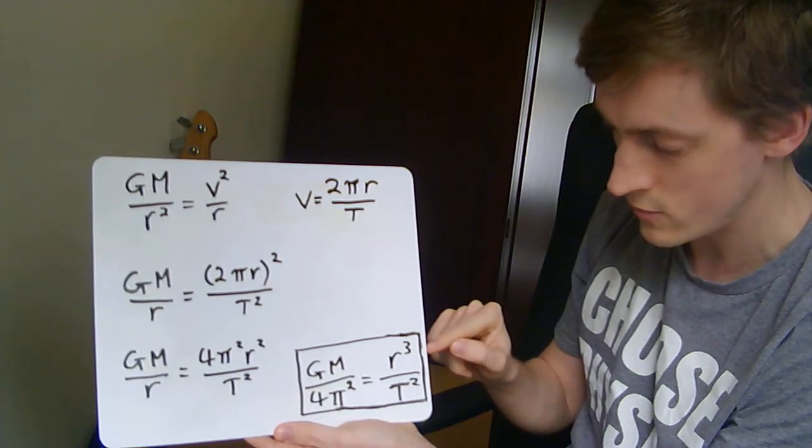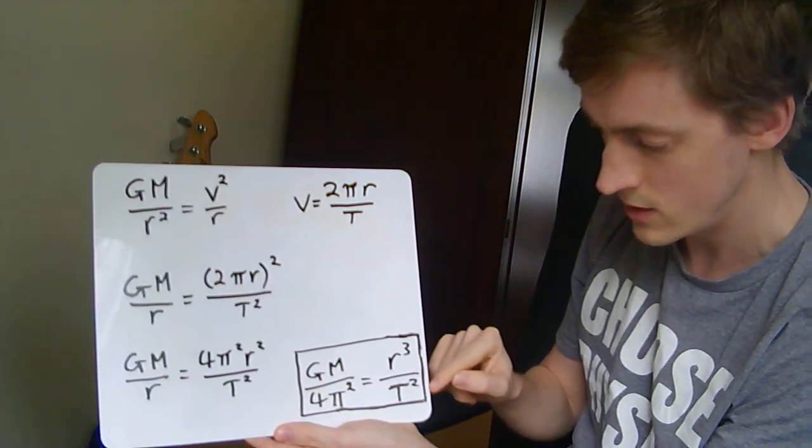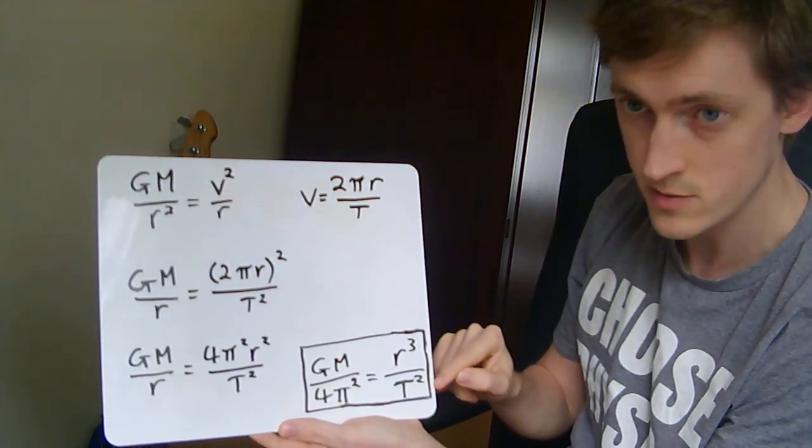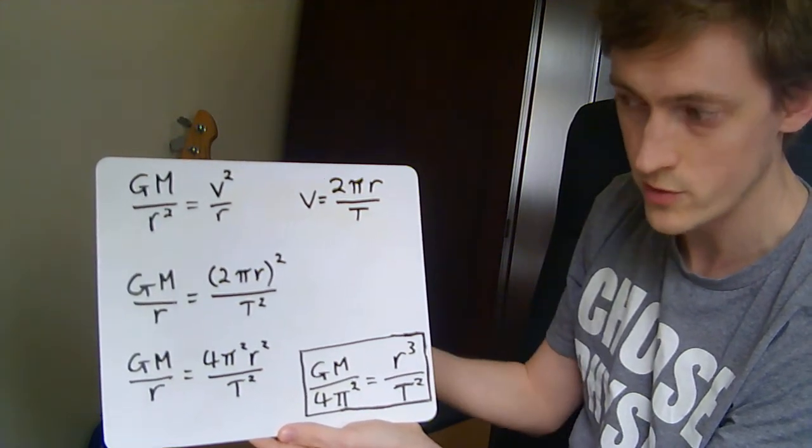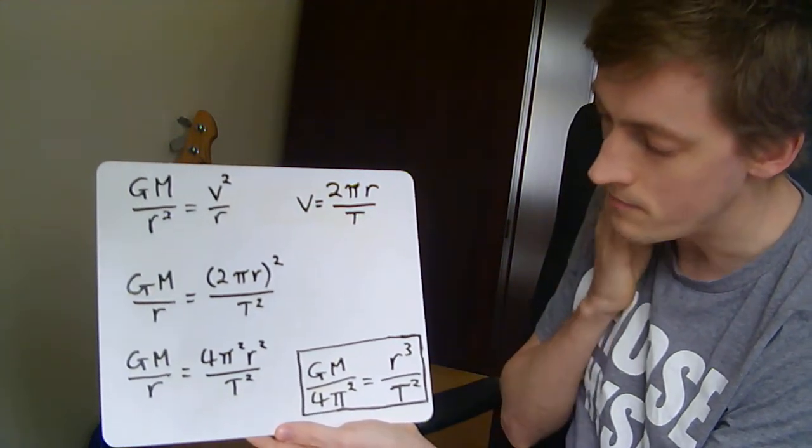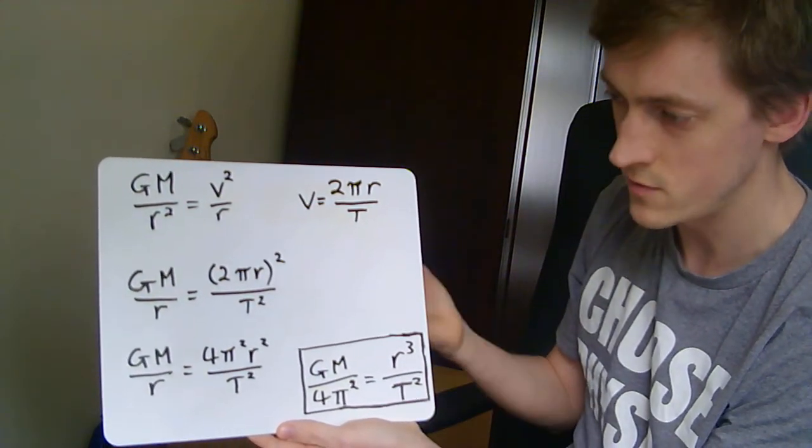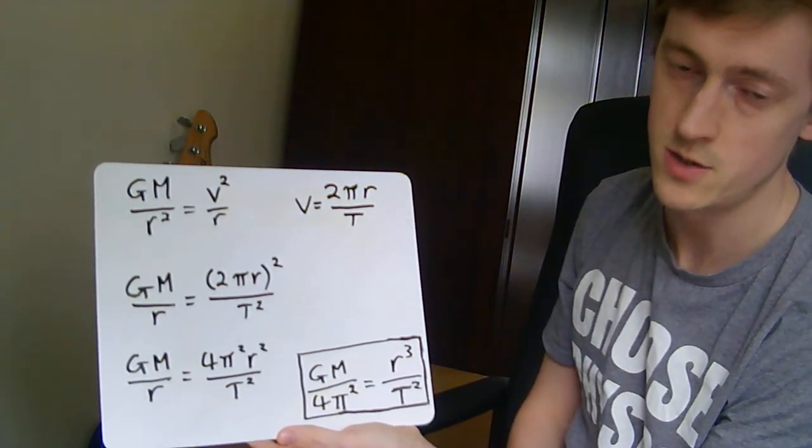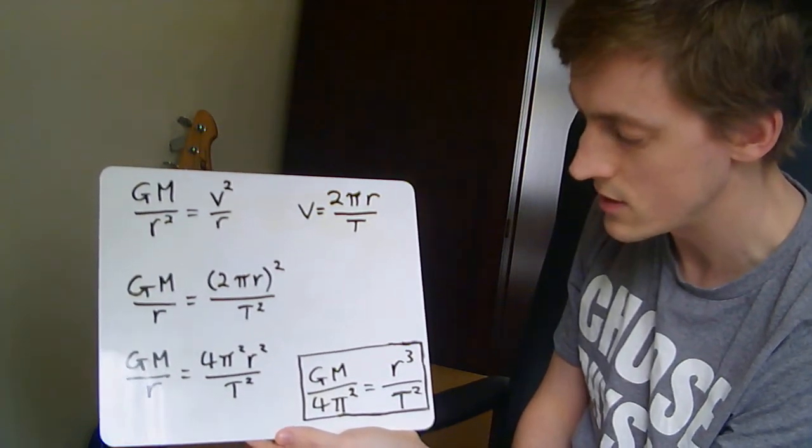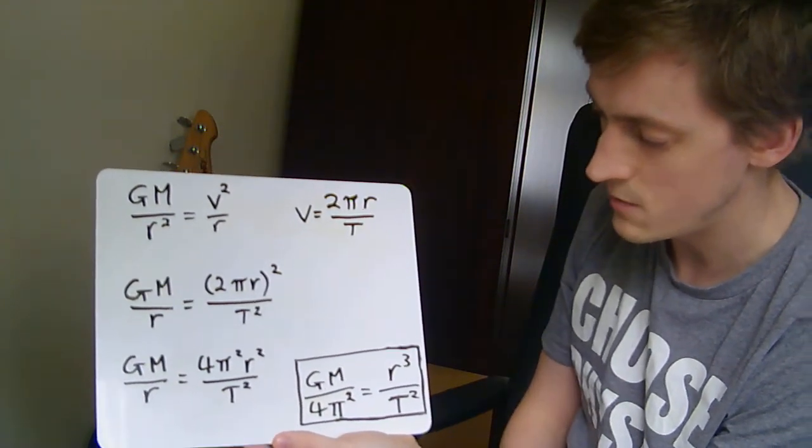So if you take the cube of the radius of orbit for the Earth and divide it by the square of the time taken to go around the Sun for us, which is one year of course, you will find it's the same number as if you do the same for Mars or Jupiter or other planets. R cubed over t squared is the same for all of them. But why?